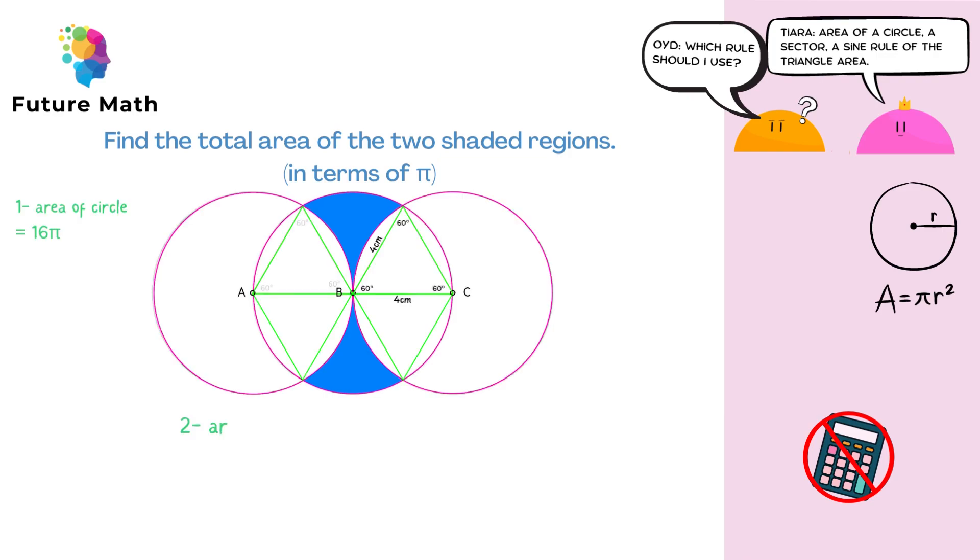Second, find the area of an equilateral triangle. This means each angle is 60 degrees. And here, since we don't have the height, we need to use the sine rule, which is half times A times B times sine C, and that is half times 4 times 4 times sine 60.